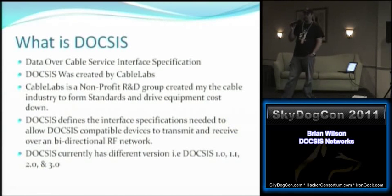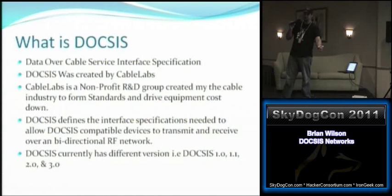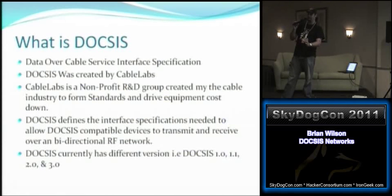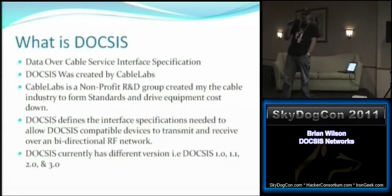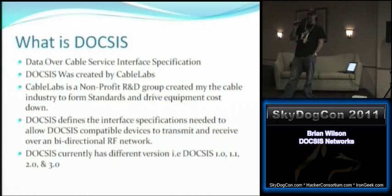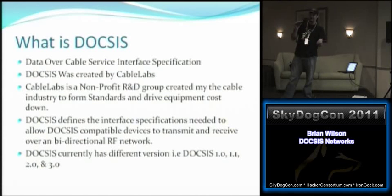DOCSIS 2.0's major upgrade was minor IPv6 support and higher-order modulations in the upstream. The latest flavor is DOCSIS 3.0, which takes everything from 1.0, 1.1, and 2.0 and makes it much better. Instead of using one downstream 6 MHz frequency block capable of about 36 Mbps, DOCSIS 3.0 enables channel bonding — striping multiple downstream carriers together like RAID striping, into one big pipe.